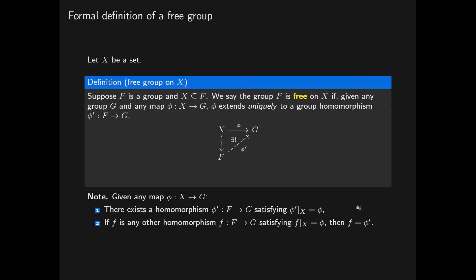So to determine whether two homomorphisms from F to G are equal, it suffices to check that they are equal on the subset X.